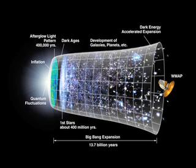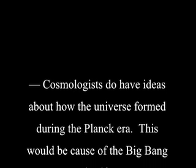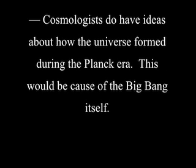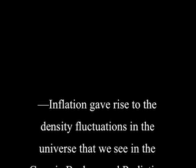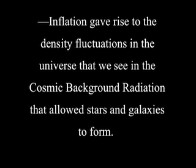So there we have it. We went from the beginning of time to where we are today. Not a bad journey once we got past the Dark Ages — things went rather smoothly. Let's run over a few key points. First, cosmologists do have ideas about how the universe formed during the Planck era very early on in the universe's history — this would be the cause of the Big Bang itself — but we need a fully formed theory of quantum gravity to fully understand what's going on during this time. Second, inflation gave rise to density fluctuations in the universe that we see in the cosmic background radiation. This is what allowed stars and galaxies to form — some regions had more matter than the voids.